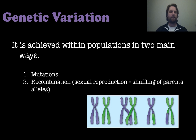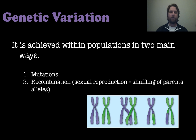Let's talk about genetic variation and how it's achieved. There are two main ways we can get genetic variation within a population: we can either have mutated genes, or we can have recombined genes. Recombination happens through sexual reproduction and the shuffling of parents' alleles — recombination within the formation of gametes, and then random fertilization.